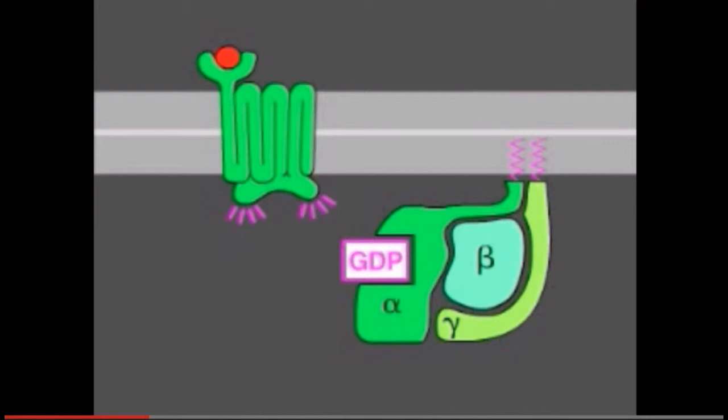In the absence of a signal, the alpha subunit has GDP bound, and the G-protein is inactive. In some cases, the inactive G-protein is associated with the inactive receptor, while in other cases, as shown here,